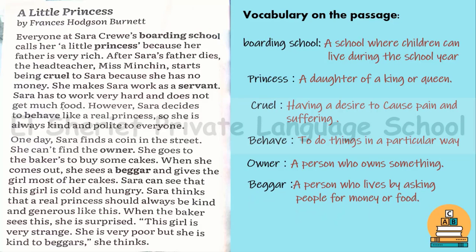Number six: 'beggars.' Beggars are people who live by asking others for money or food. You can see them in the street. There is a famous saying: 'Beggars cannot be choosers.'